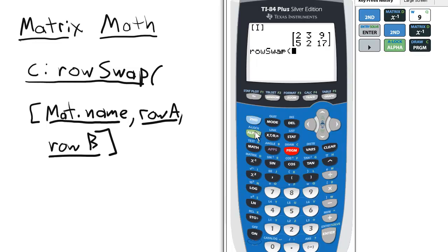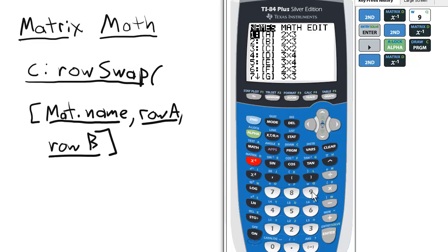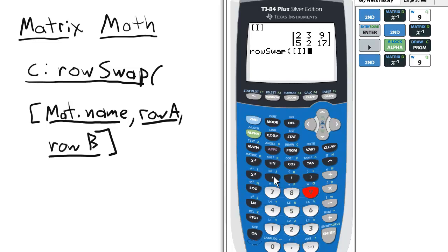We have to select a name so in this case we have to go back to the matrix menu and select nine which is I, put a comma, and then I want to swap rows one and two so just put one and two separated by comma and enter. And now look, the first and second rows of matrix I are swapped.